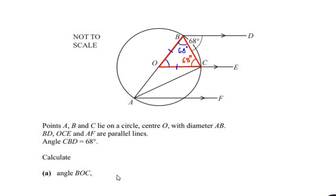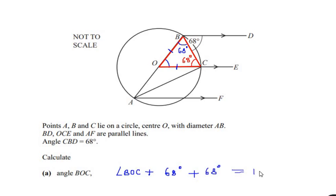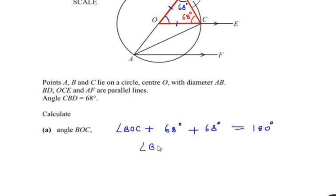Now since we have to find angle BOC, we can use the angle sum property of the triangle and write: angle BOC + angle OBC (which is 68 degrees) + angle OCB (which is also 68 degrees) = 180 degrees. So angle BOC = 180 − 68 − 68, which gives us an angle equal to 44 degrees.